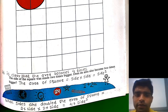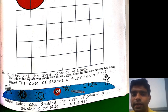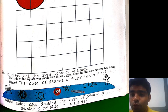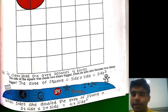Now, when the side is doubled, the area of a square equals two × side × two × side, which gives us two × two = 4, so the area becomes 4 × side².